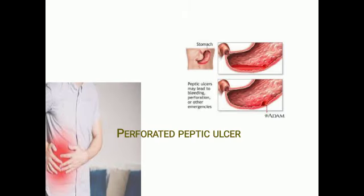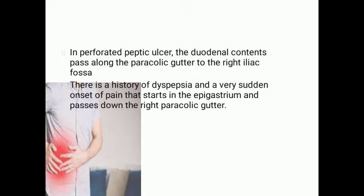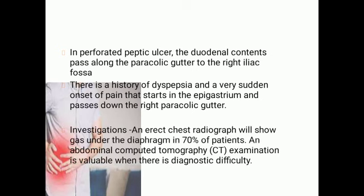Moving on to perforated peptic ulcer as another differential diagnosis. In a perforated peptic ulcer, the duodenal contents may pass along the paracolic gutter to the right iliac fossa. There is a history of dyspepsia with a sudden onset of pain that starts in the epigastrium and passes down the right paracolic gutter. Investigations include erect chest radiograph, which may show gas under the diaphragm in almost 70% of cases, and CT scan of the abdomen.